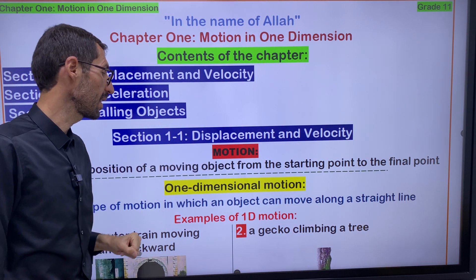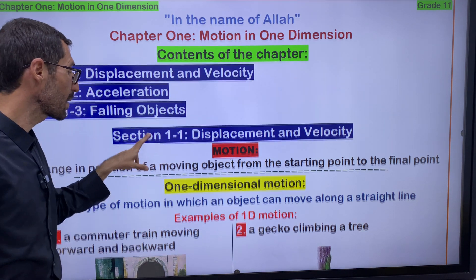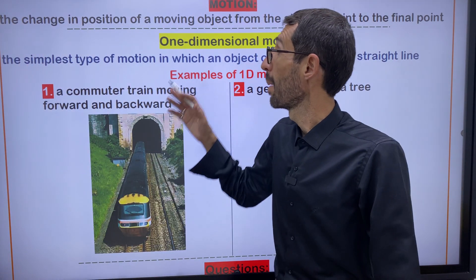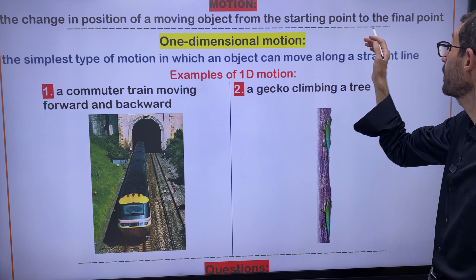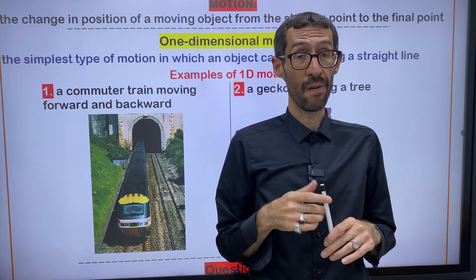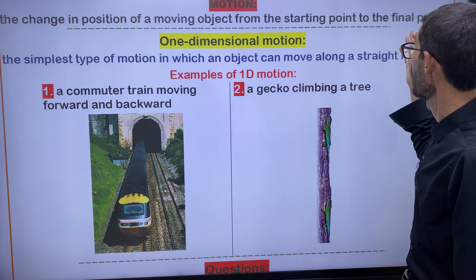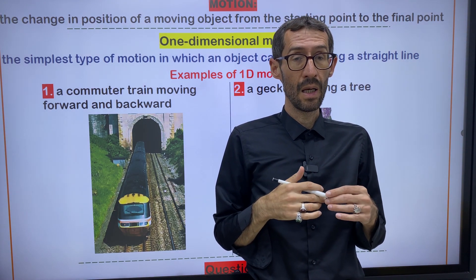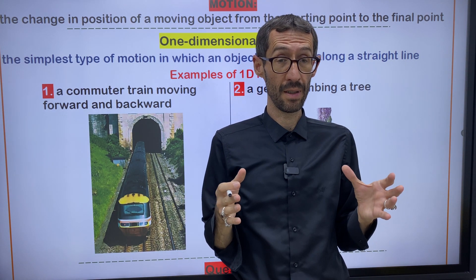Let's start with Section 1-1. The title of the section is Displacement and Velocity, but the first subject I'm going to explain is motion. What is motion? The definition of motion: motion means the change in position of a moving object from the starting point to the final point. Simply, motion is a change in position from the starting point to the endpoint of the object.